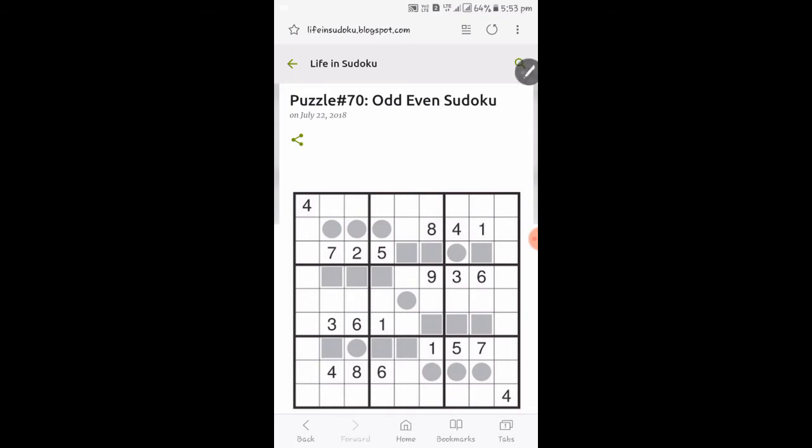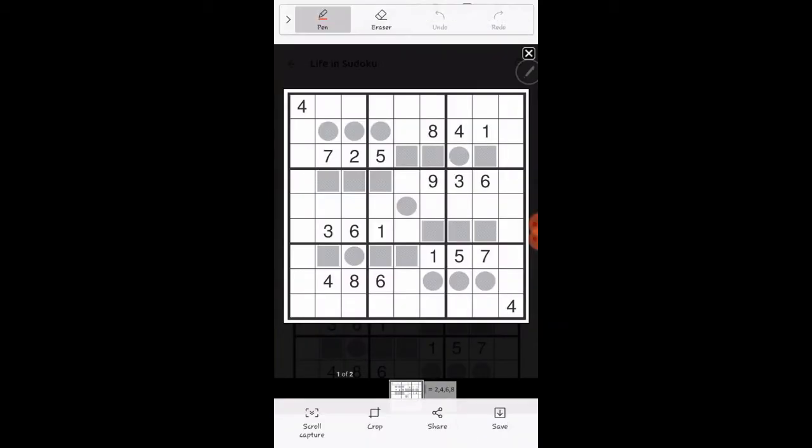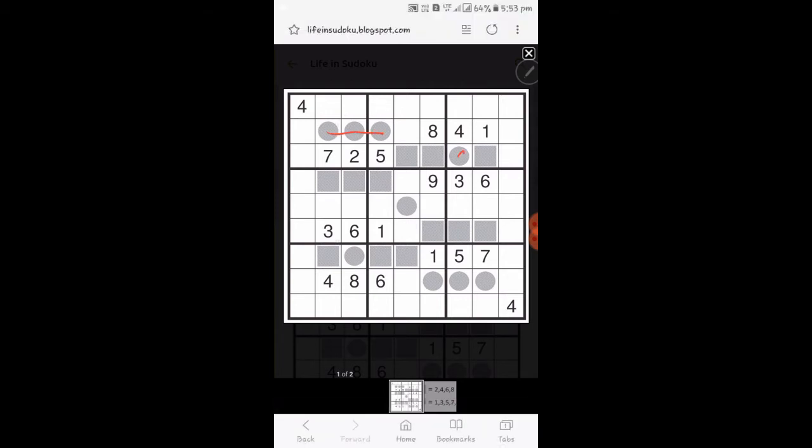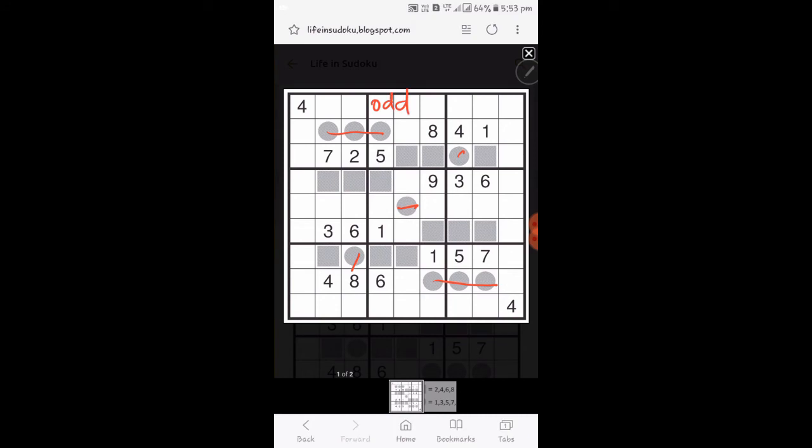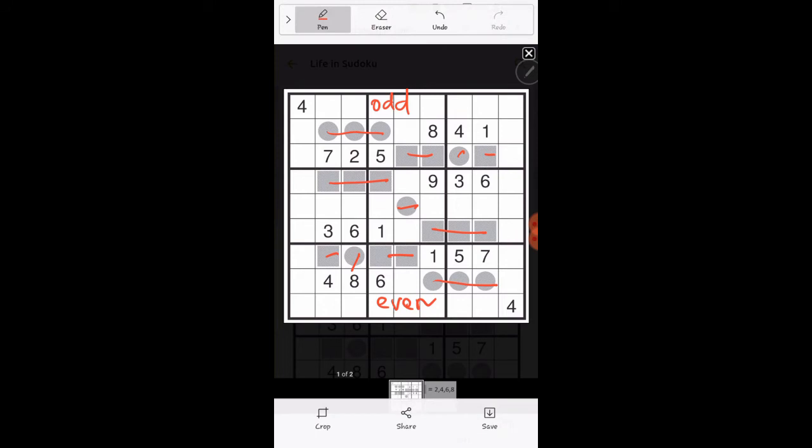You are seeing some shaded cells with shaded circles or shaded squares. Wherever shaded circles are there, these are odd cells. Wherever square cells are there, they are even cells. This means in circles only odd numbers can come, and in squares only even numbers can come.